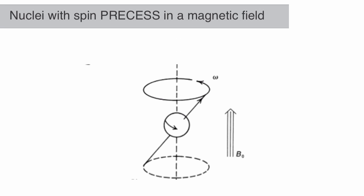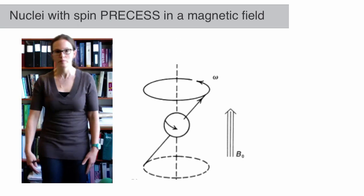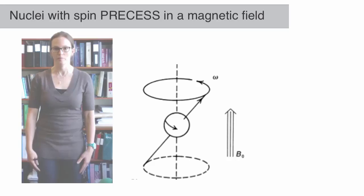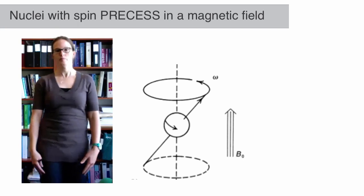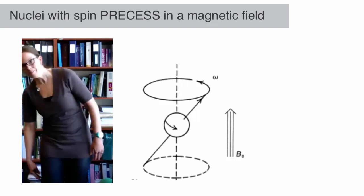These nuclei also begin to precess about their own axis of spin with an angular frequency ω, called the Larmor frequency or the resonance frequency. The stronger the spectrometer, the greater the resonance frequency of the proton.